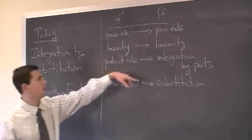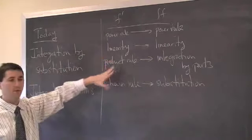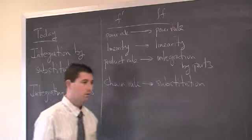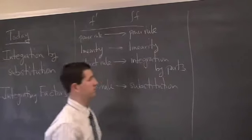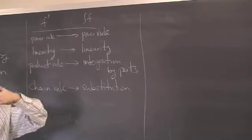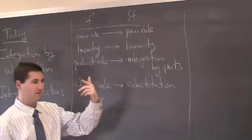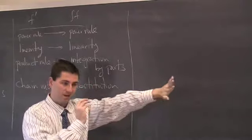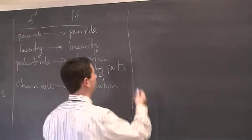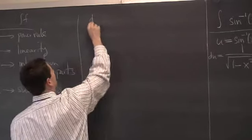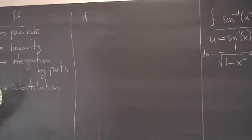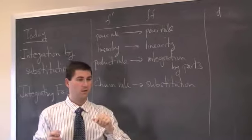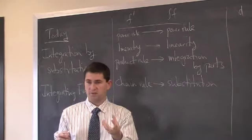If you ever forget what these things are, you just remember where they came from — you can re-derive the whole rule. So let's start with the chain rule and use it to build a formula for substitution. The way it's done every single time is we write down the differential. When we had the product rule, we wrote down d(uv). For the chain rule, remember it has to do with what happens when you take the derivative of a composition of functions — like x plus 3 quantity squared, which is a composition of x plus 3 and x squared.